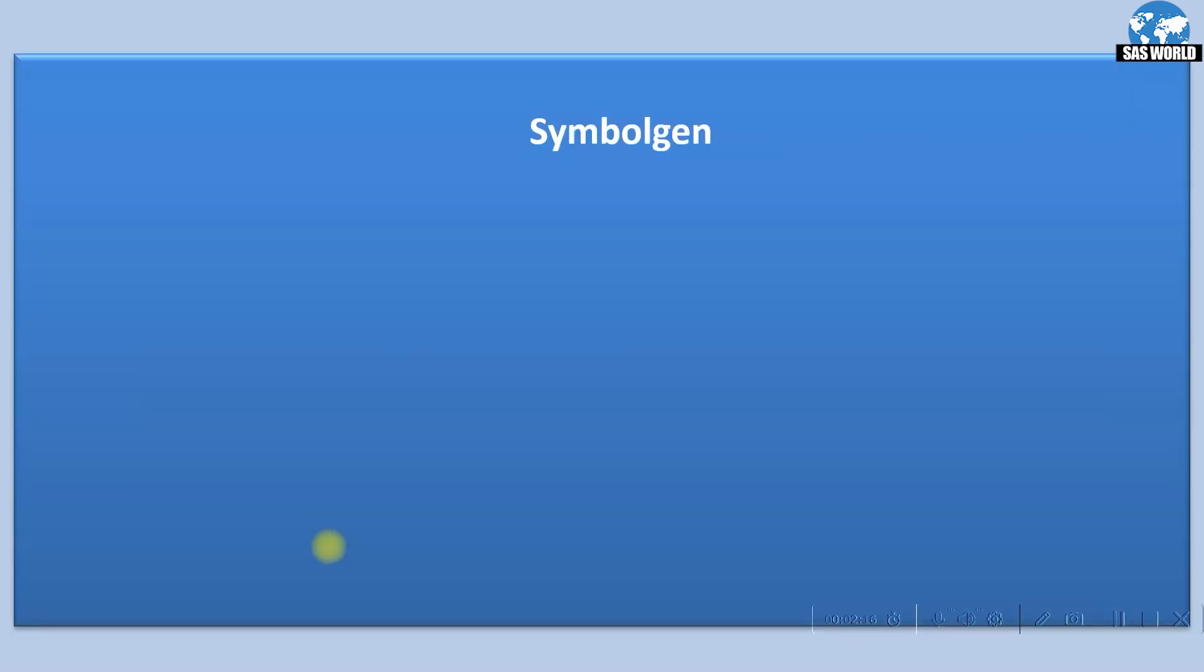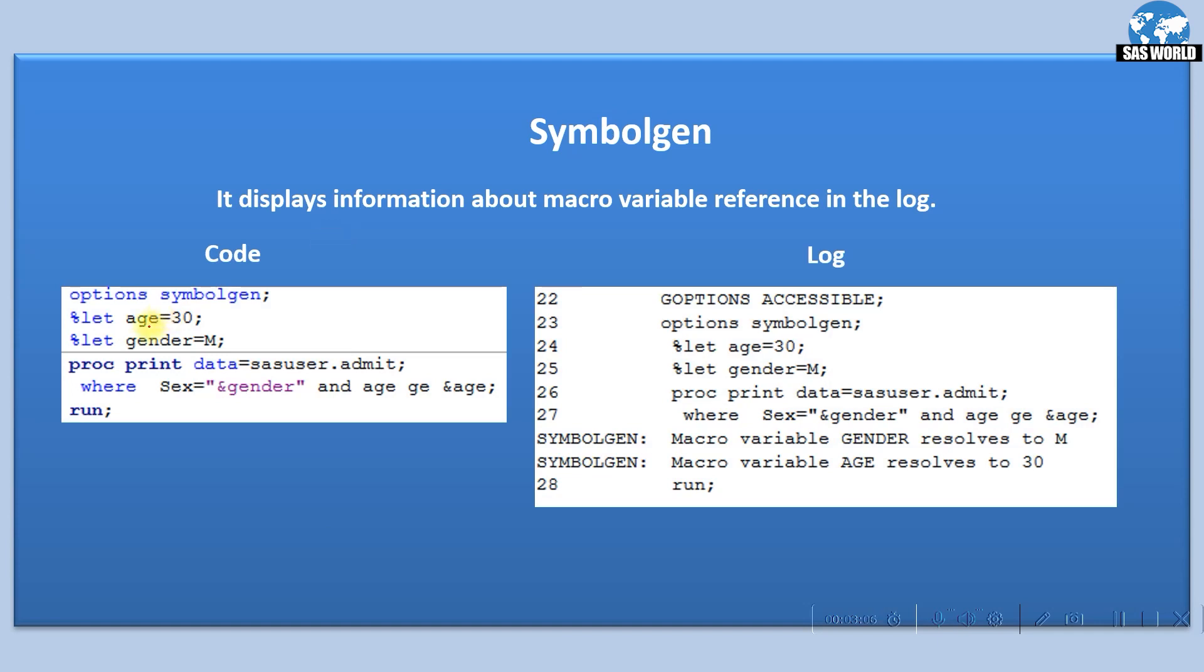Let's understand these options in detail. The first is symbolgen. It displays information about macro variable reference in the log. When we declare any macro variable and use it in our SAS program, if you want to see the value it's resolving to in the SAS log, we can use symbolgen. This is a very good option to debug.